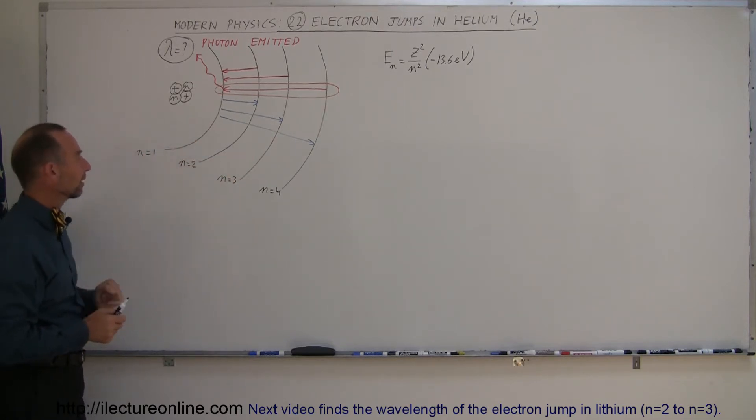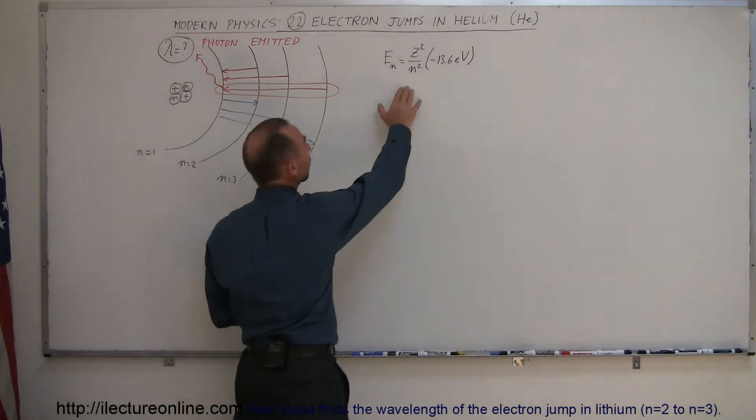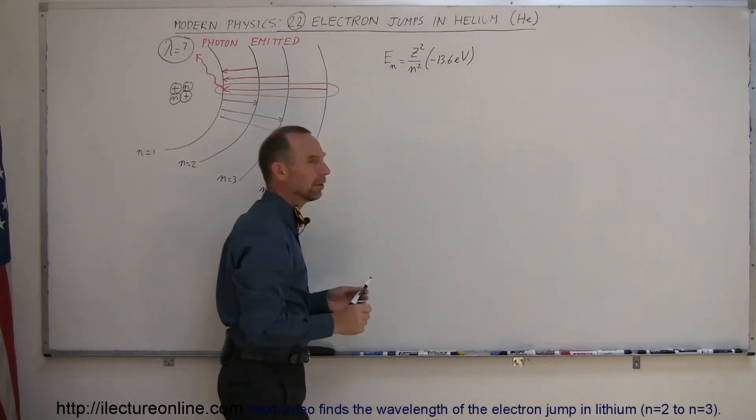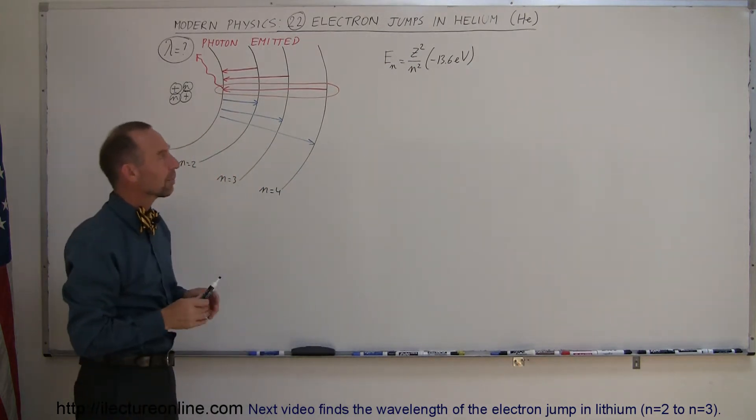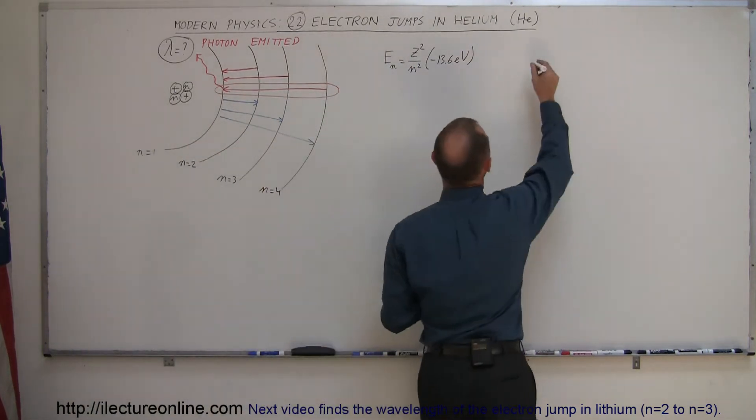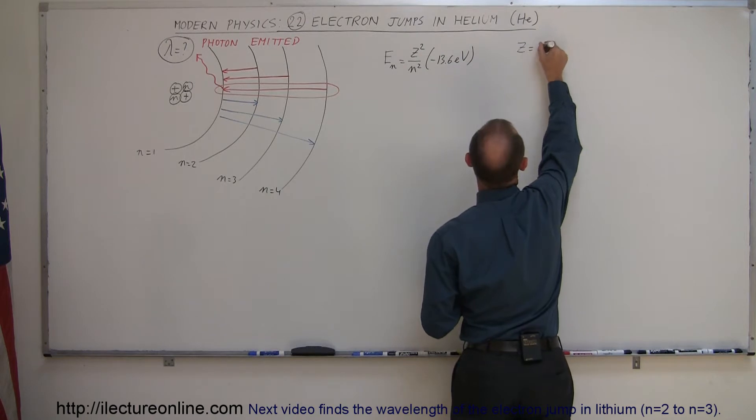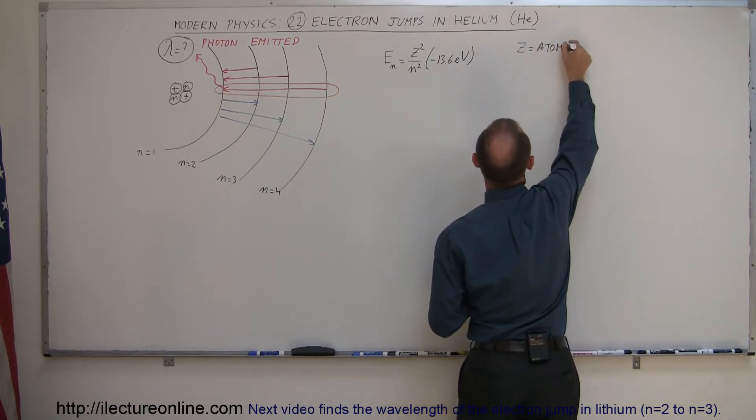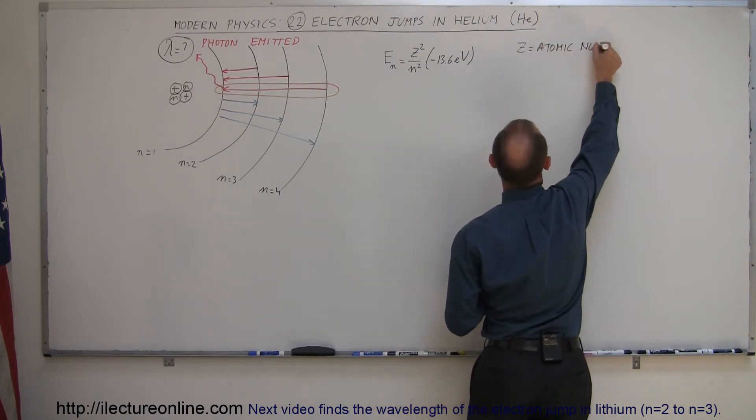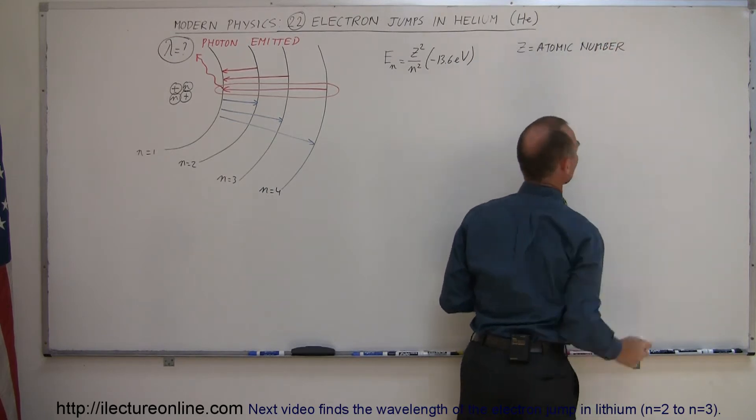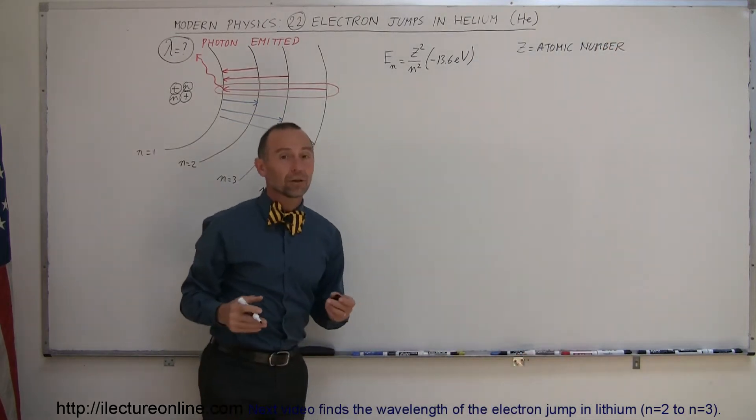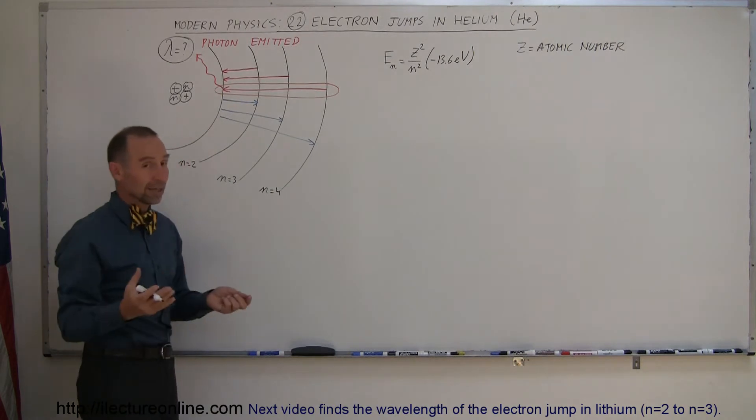So to find the energy of the various levels, the various orbits that the electrons can be in a helium atom, we use now this augmented equation where we added the z-squared there, where z represents the atomic number. So let's write that down. z is the atomic number. And that is another way of saying the number of protons in the nucleus.